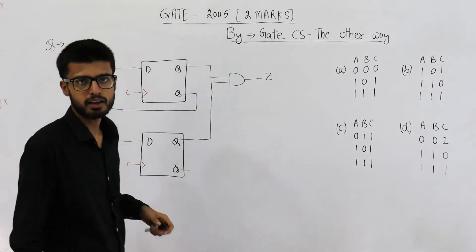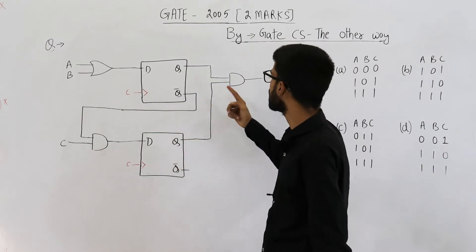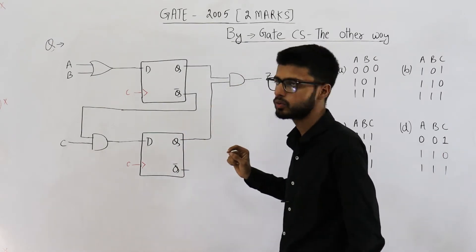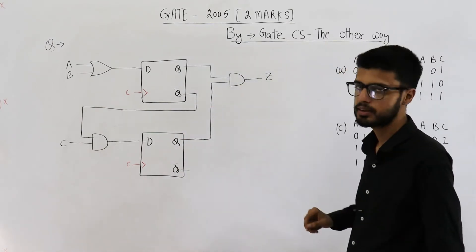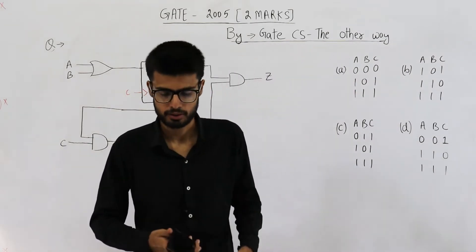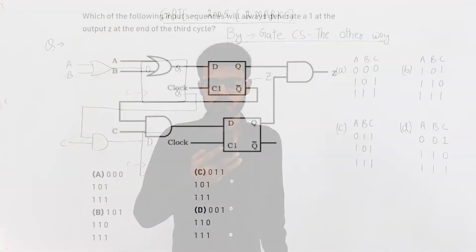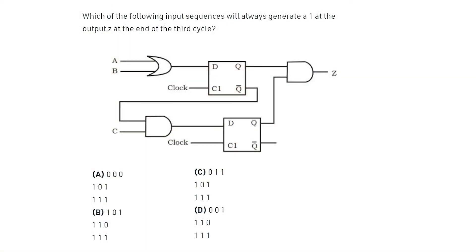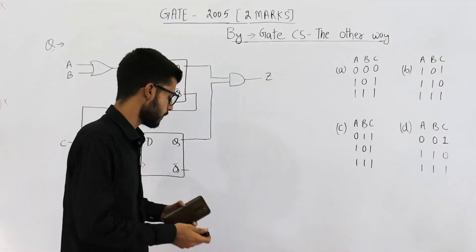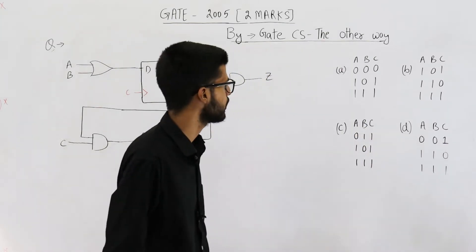They have given you this diagram. You can see we are using two D flip-flops and their output is ANDed. So the final output of this circuit is Z. Let's first read the entire statement.